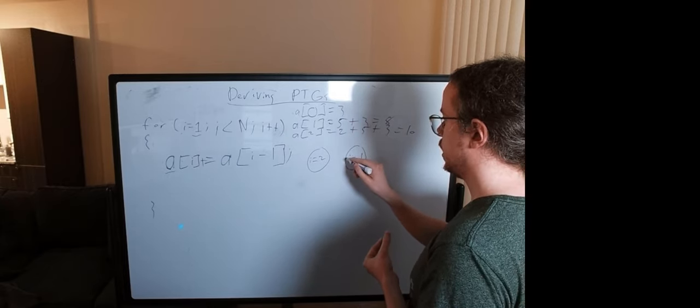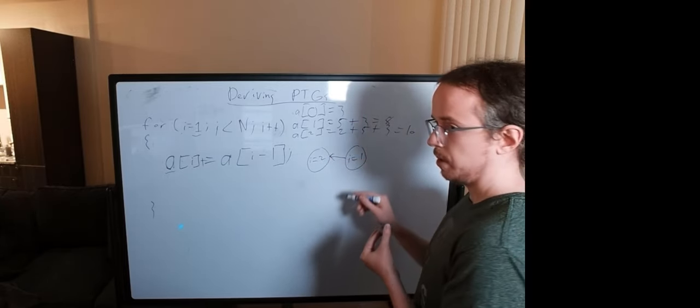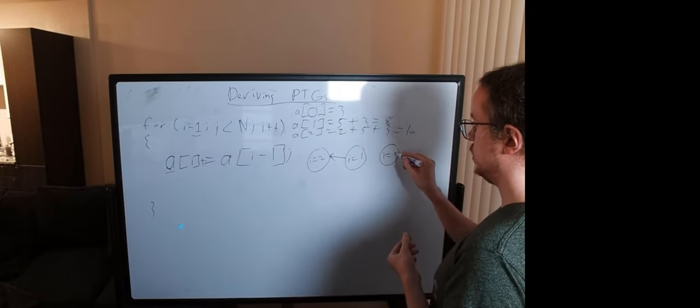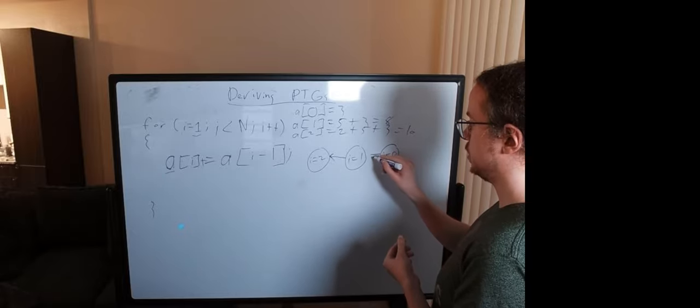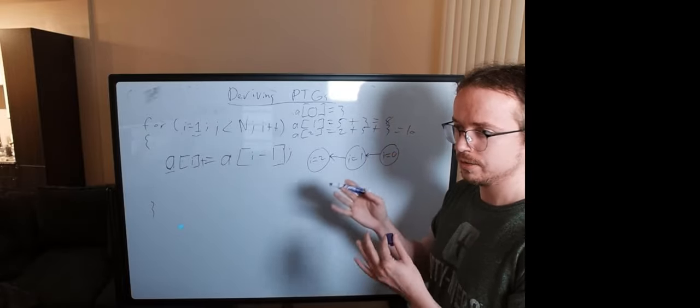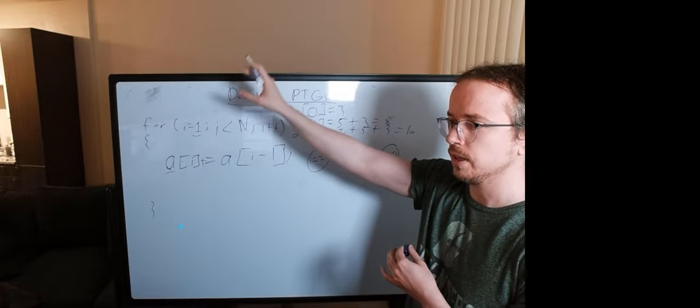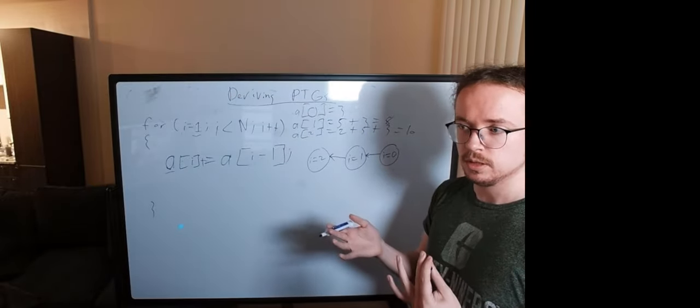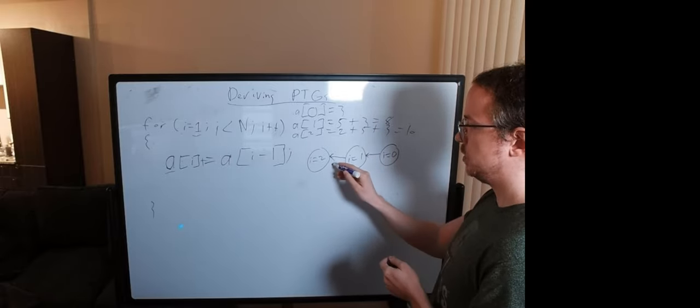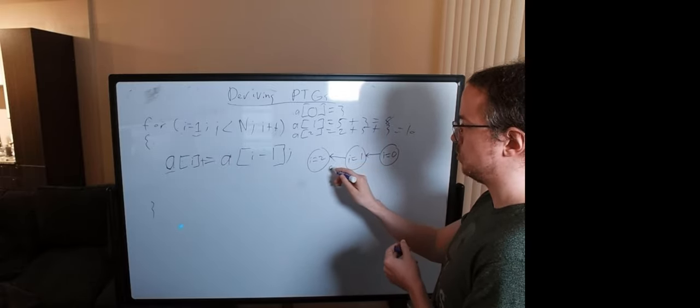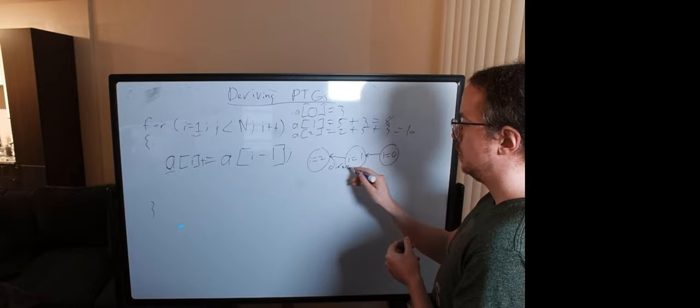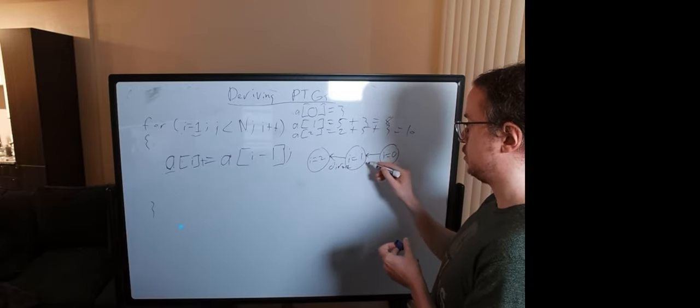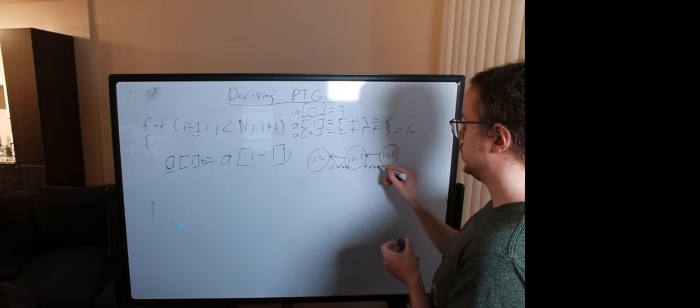So we will create a dependency here. And likewise, i equals one depends on i equals zero. Now in this case, i equals zero is initiated somewhere up here. So this is sort of a trivial dependency, but it's still a dependency. i equals two depends on one directly, and i equals two depends on i equals zero transitively.